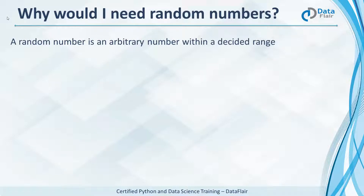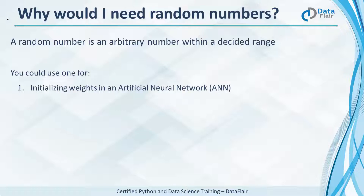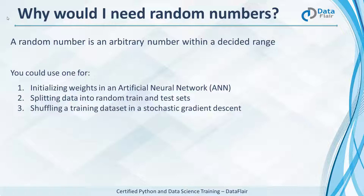A random number is an arbitrary number within a given range. Think of dice — when you throw a die, you randomly get a number from 1 to 6. In Python, you may need random numbers for initializing weights to synapses in artificial neural networks, splitting data into random train and test sets, and shuffling training datasets.